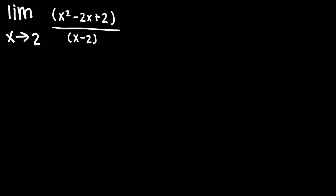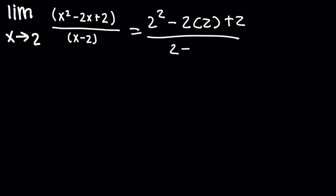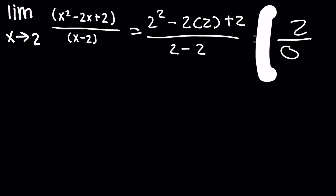Here's another problem — pause the video and try this one on your own. The limit as x approaches 2 of x squared minus 2x plus 2 over x minus 2. Plugging in 2: on the bottom, 2 minus 2 is 0. On the top, 2 squared is 4, minus 2 times 2 is minus 4, plus 2, which all comes out to 2. So we have 2 over 0, which means the limit is undefined — it doesn't exist; there's a vertical asymptote.